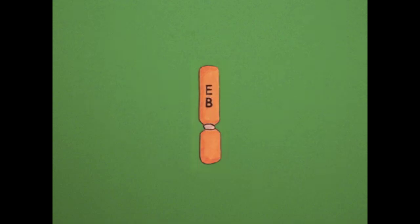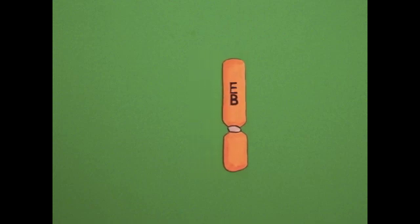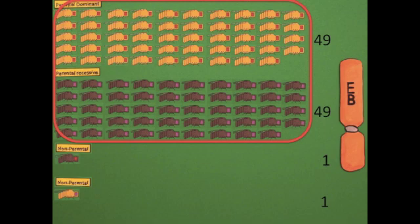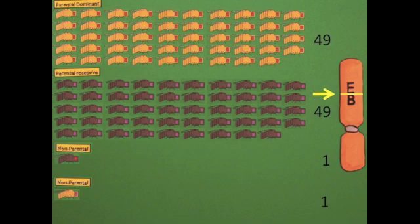When genes are linked, the proportion of each phenotype is determined by the distance between the two genes. For example, if the black body and purple eye traits are very close to one another, we would expect very few non-parentals compared to parentals. That's because the likelihood of a crossover occurring within that small area on the chromosome is also small.